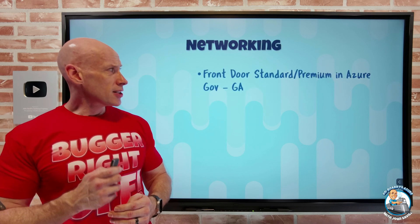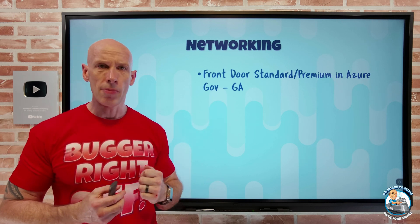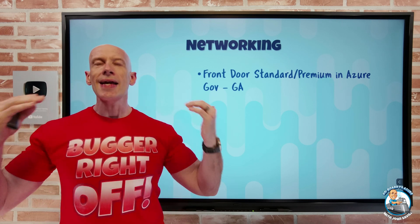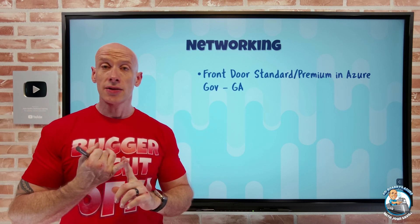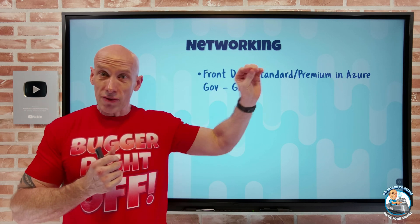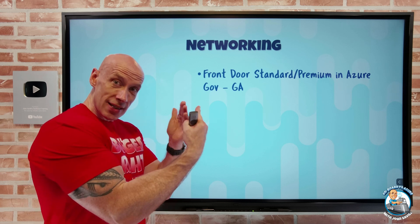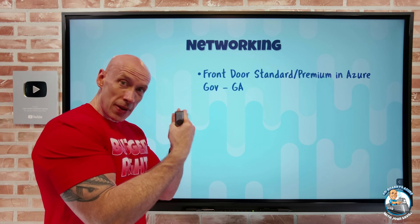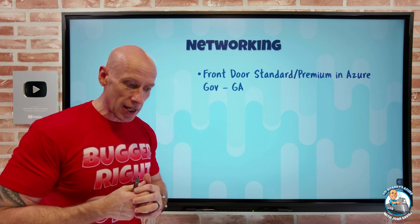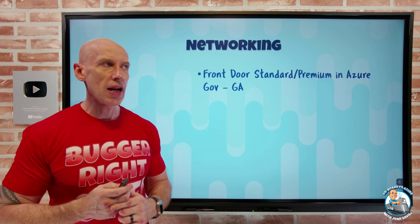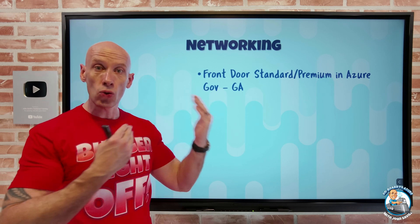On the networking side, Azure Gov now has Front Door Standard and Premium. Front Door is a layer-seven solution fantastic for web-based workloads. It has an Anycast address, meaning it's available on all points of presence on the Microsoft WAN. It does split TCP, so your session terminates at the closest point, giving a quicker overall experience. It can cache information, and you can add a web application firewall for additional resiliency.